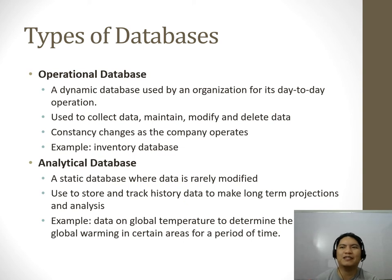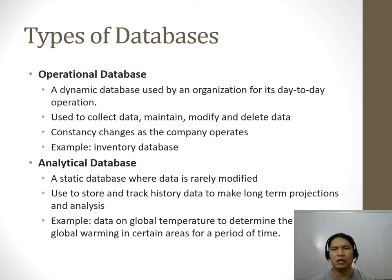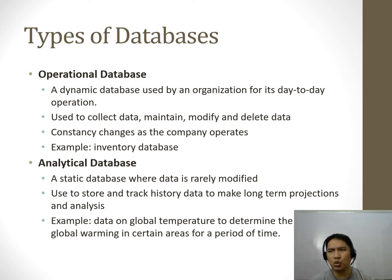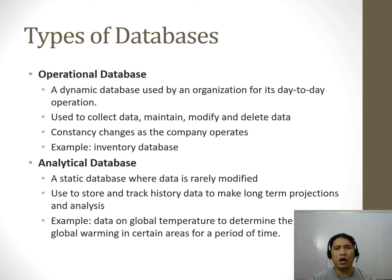There are two main types of databases. The first is the operational database — a dynamic database used by an organization for its day-to-day operations; transaction processing systems normally access this kind of database. The second is the analytical database, where the data is more static — rarely modified because it is there to track history over a long period of time. An example is global temperature records, which help us monitor global warming and understand climate change.